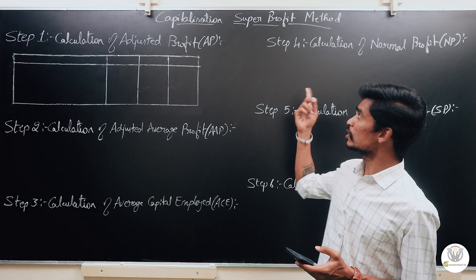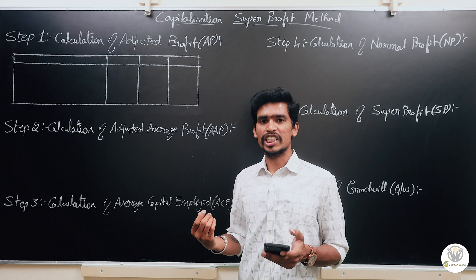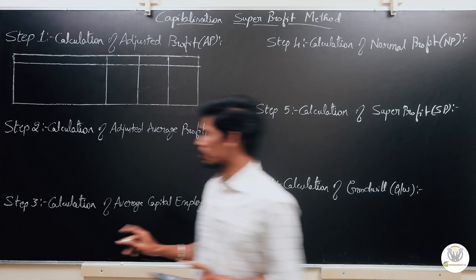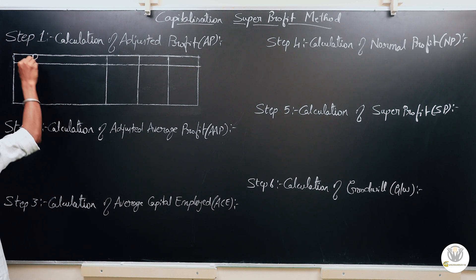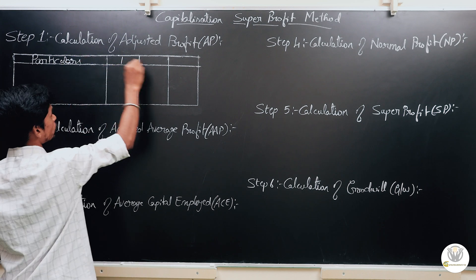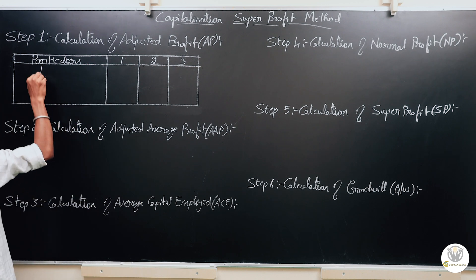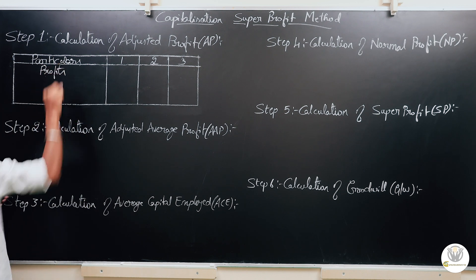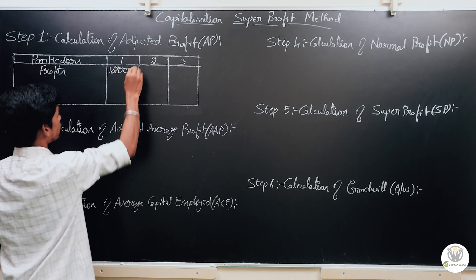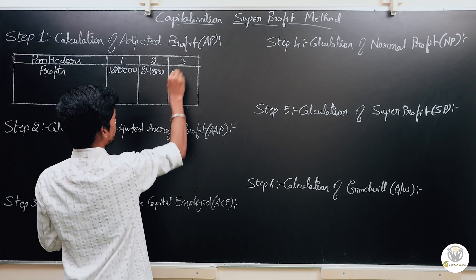This problem is based on the capitalization super profit method. Step 1: Calculation of adjusted profits. The given profits are: 1st year Rs. 1,20,000, 2nd year Rs. 84,000, 3rd year Rs. 1,68,000. There is one adjustment — managerial remuneration of Rs. 24,000 per annum is to be deducted from the given profits each year.